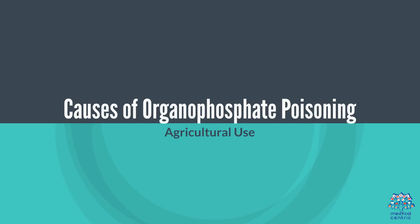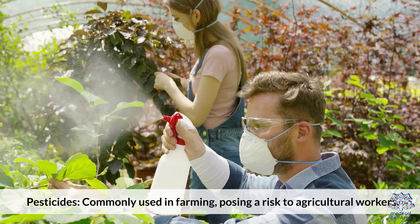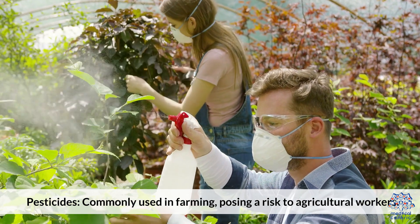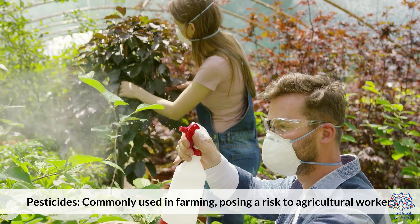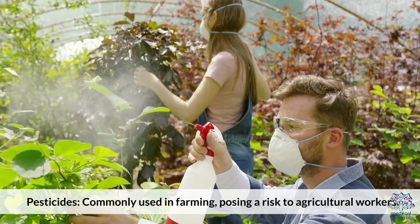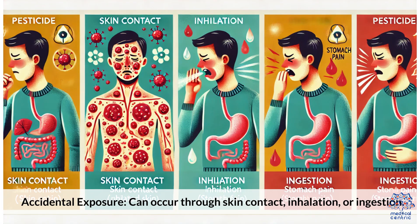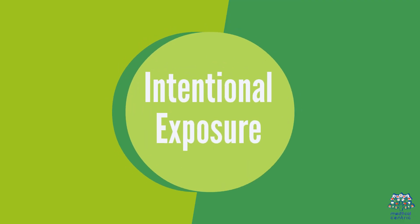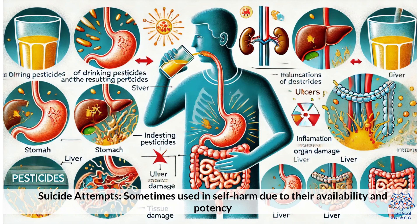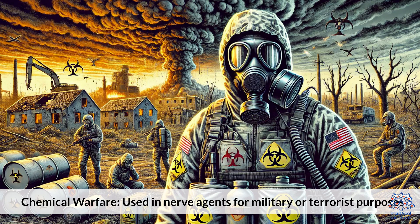Causes of Organophosphate Poisoning: Agricultural use – pesticides commonly used in farming pose a risk to agricultural workers. Accidental exposure can occur through skin contact, inhalation, or ingestion. Intentional exposure includes suicide attempts, sometimes used in self-harm due to their availability and potency, as well as chemical warfare – used in nerve agents for military or terrorist purposes.